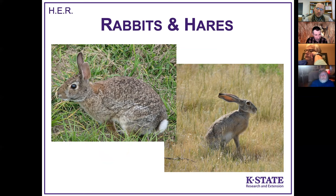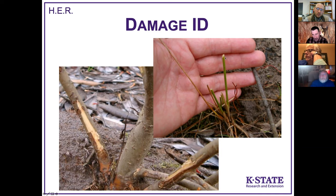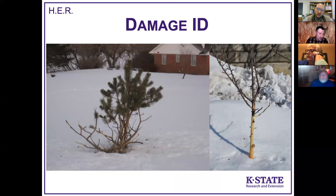Rabbits and hares: in eastern Kansas you probably don't see many jackrabbits, though you may see a few. We have eastern cottontails and the black-tailed jackrabbit, which is actually a hare. Their damage looks fairly similar — they eat bark and tend to bite through it with their long incisors and tear it, leaving strips of bark torn off. When they bite plants off, they almost always do so at an angle. So strips of torn bark and clean angular bites on plant stems are good signs of rabbit or hare damage. In winter with prolonged snow cover, they can be very devastating to woody plants in a yard.